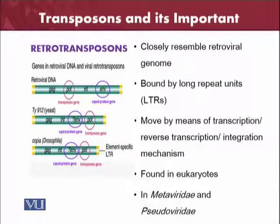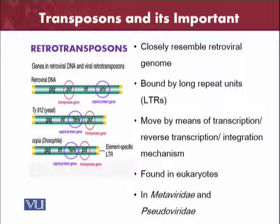Simple transposons don't undergo reverse transcription. However, retro transposons can move by reverse transcription, normal transcription, and integration mechanisms. They are found in most eukaryotes, while simple transposons are present in prokaryotes. The classical examples for retro transposons are the Metaviridae and Pseudoviridae — two different genera which contain retro transposons.